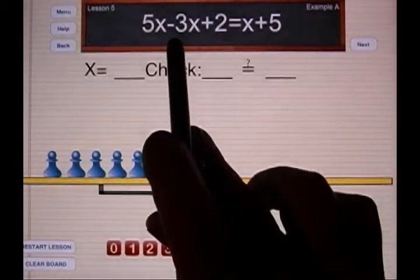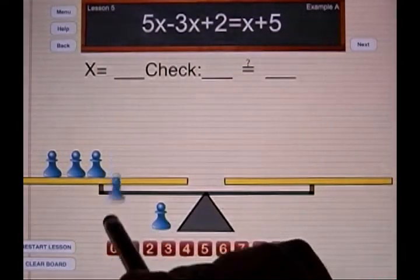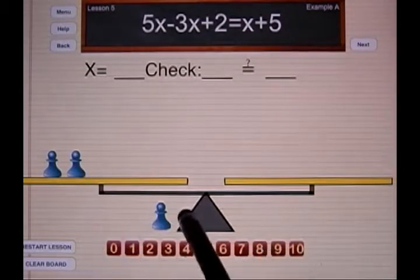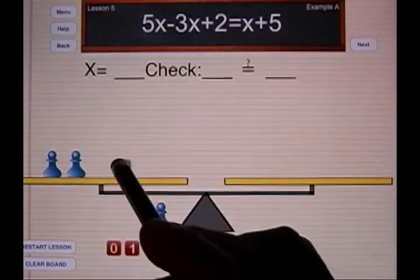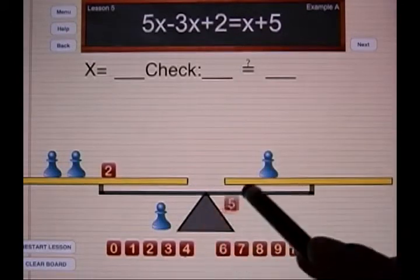Now this time it doesn't say to add, it says to subtract. It says to subtract three x's, so let me take away three blue pawns. It says plus two, let me add a cube with a number two, and on the right side I have x plus five.